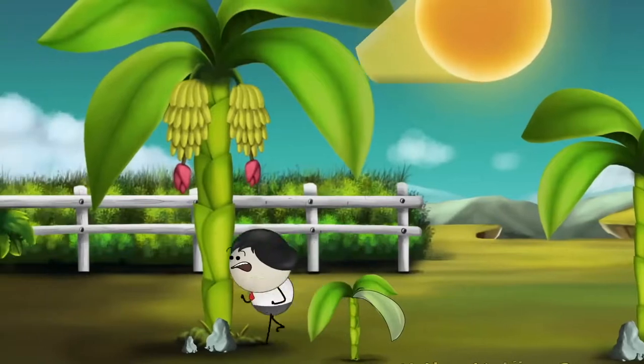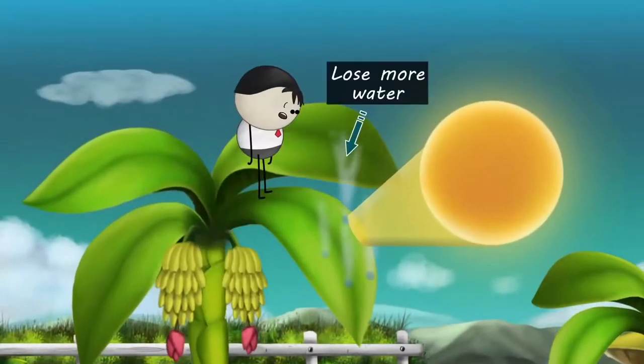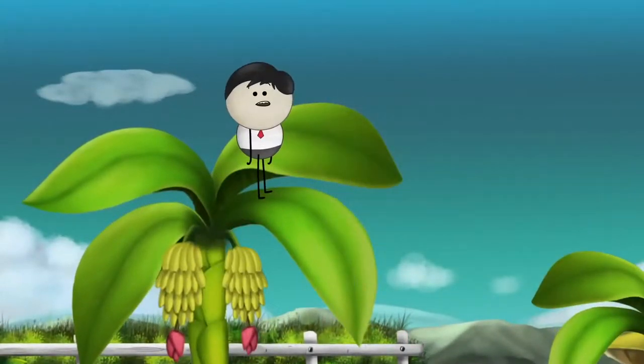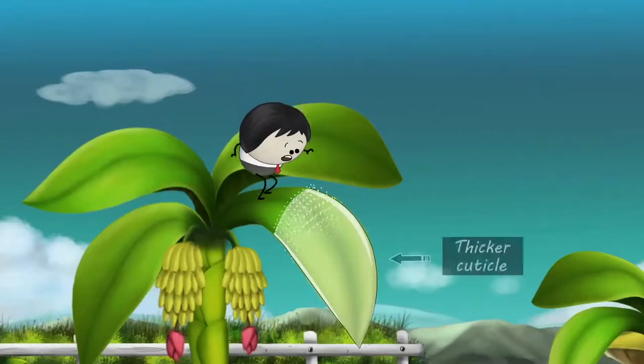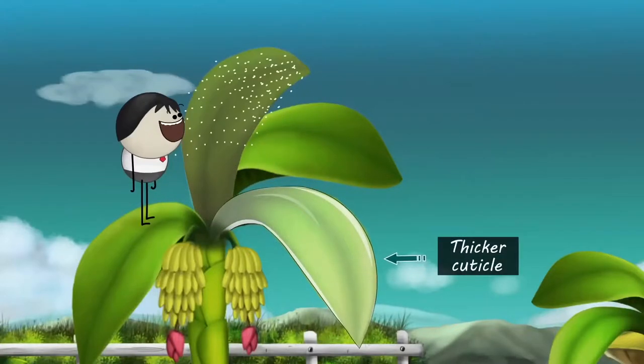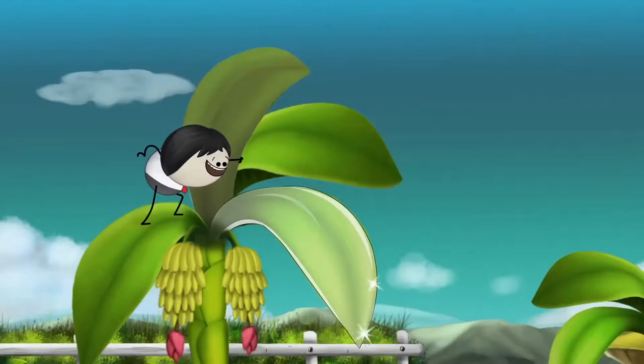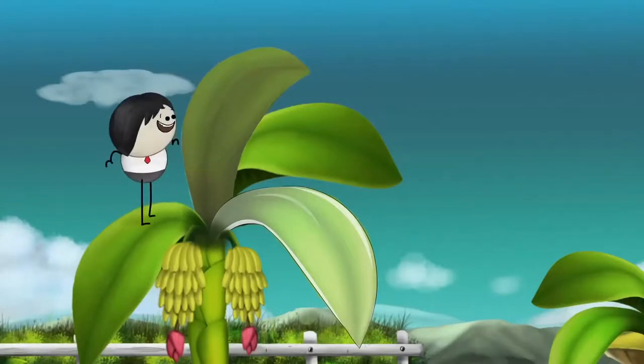But being more exposed to the sun, the upper surface will tend to lose more water. Therefore, the upper surface of the leaf is covered with a thicker cuticle as compared to the lower surface. Hence, the upper surface of the leaf is shinier than the lower surface.